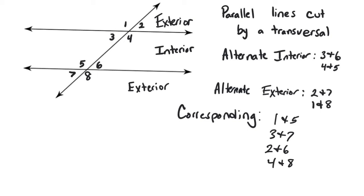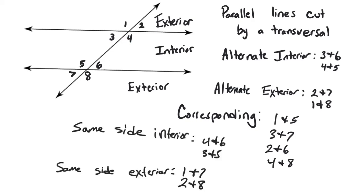There are a lot of different angle relationships. Today we're going to focus mainly on alternate interior, alternate exterior, corresponding, and same side interior — and I've also listed same side exterior. For the same side interior and exterior pairs: four and six add up to 180, three and five add up to 180, one and seven add up to 180, and two and eight add up to 180. I just want to make sure everybody understands the relationships and what these angle pairs are called: alternate interior, alternate exterior, corresponding, same side interior, and same side exterior.